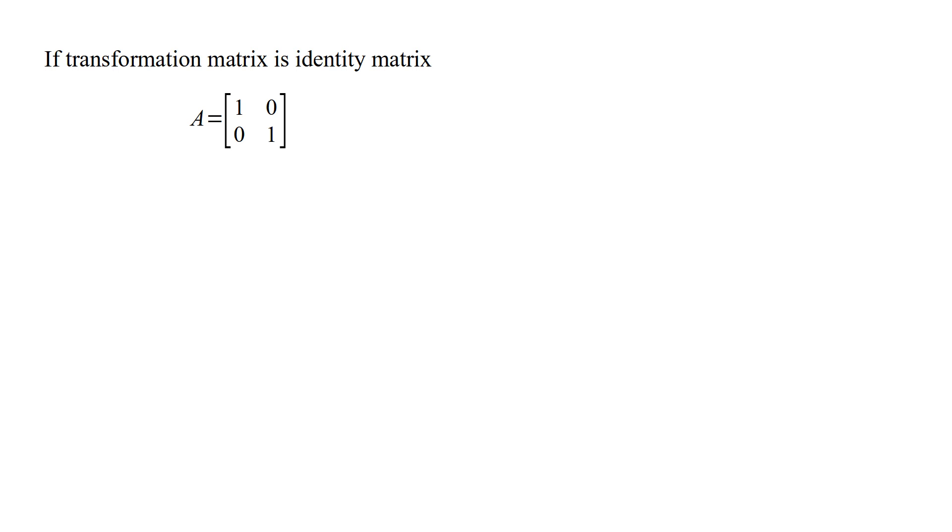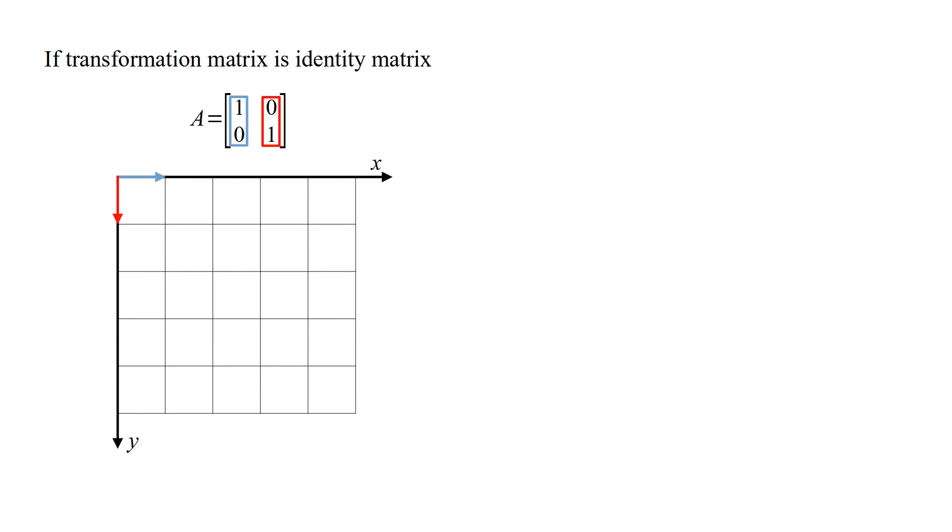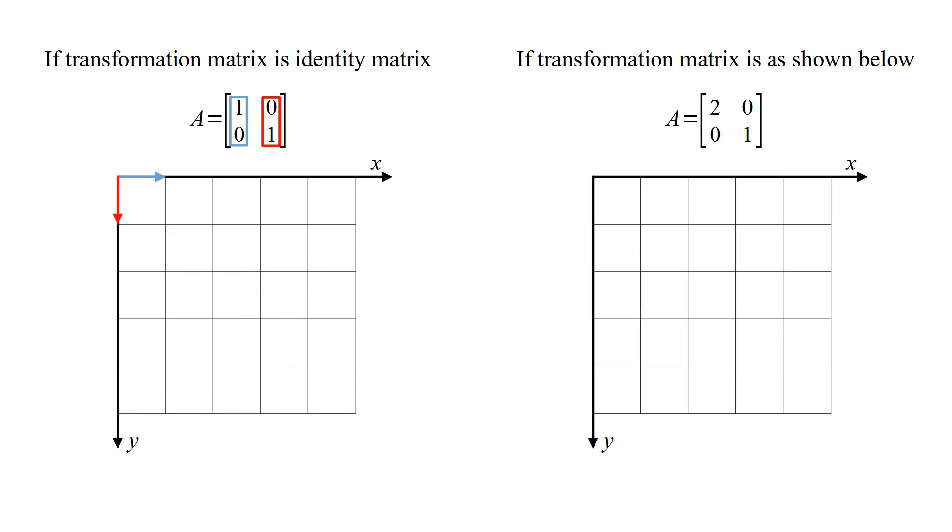If transformation matrix is identity matrix, these are the standard basis vectors. If transformation matrix is this one, horizontal basis vector is scaled by two, which means image is scaled by two in horizontal direction.